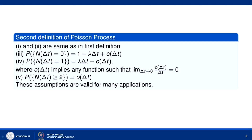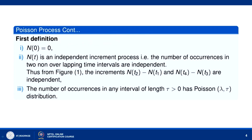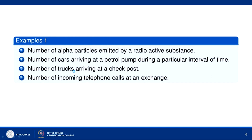So there are two definitions: Definition 1 and Definition 2. Now let us see some examples of the Poisson process: the number of alpha particles emitted by a radioactive substance, the number of cars arriving at a petrol pump during a particular interval of time, the number of trucks arriving at a check post, and the number of incoming telephone calls at an exchange.